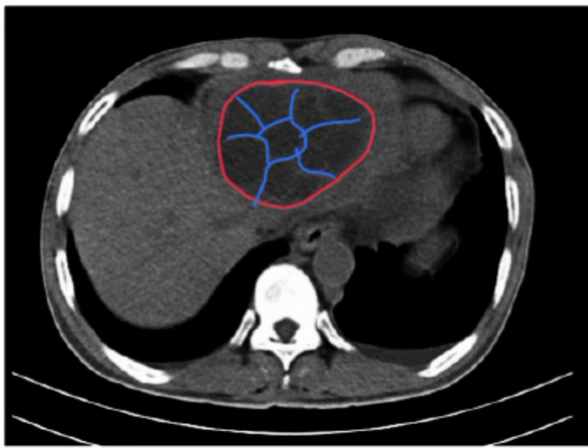On ultrasound, the cyst is seen as a well-circumscribed swelling with budding signs on the cyst membrane, and may contain free-floating hyperechoic hydatid sand. Then there is the option of CT scan, which is being discussed in this video.